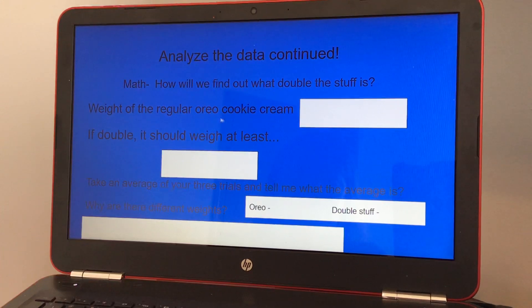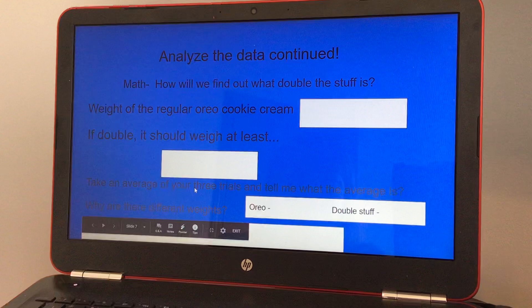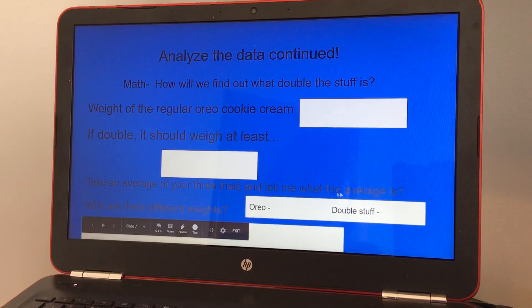The weight of the regular Oreo cookie cream minus the paper towel weight is an average. And what would double be? You'd have to either multiply it by two or add it twice to get your double the weight. And you're going to take an average of your three trials and tell me what the average is.